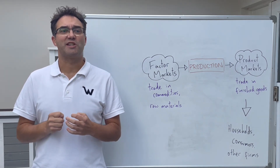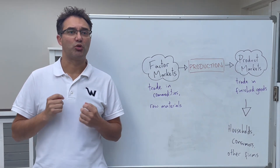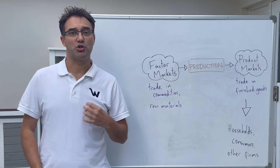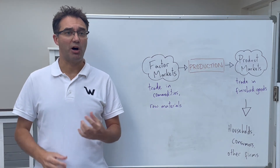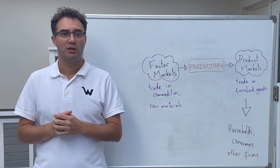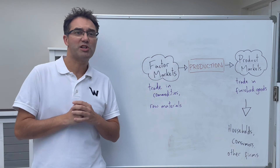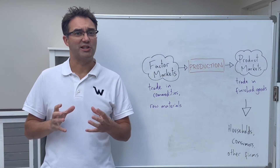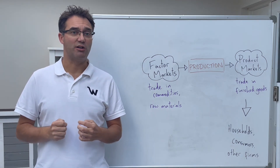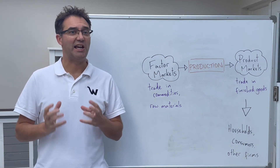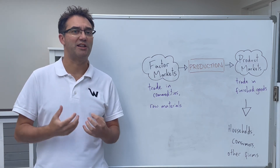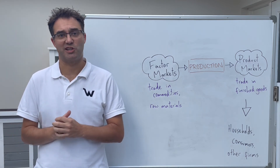Finished goods and services are sold on the product market by the firms that produce them to buyers such as consumers or other firms. We can also term consumers as households, because they spend the money that they earned from selling their labour on the factor market to buy those finished goods and services.